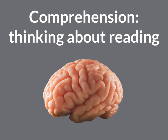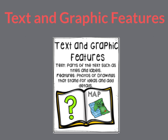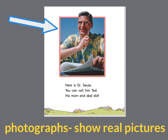You got it — you use your brain! So get your brains warmed up. Our comprehension strategy is looking at text and graphic features. The text features are parts of the text such as titles and labels. The graphic features are photos or drawings that stand for ideas and add details. Let's take a look at this page from our story, Dr. Seuss.